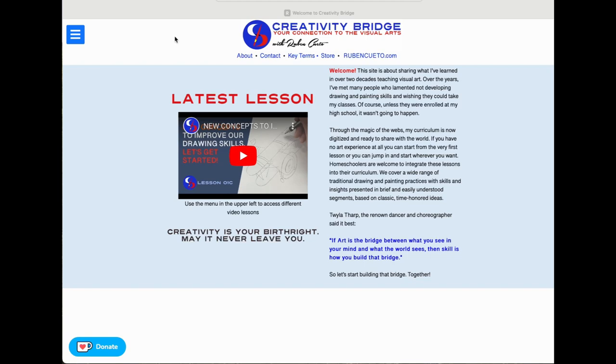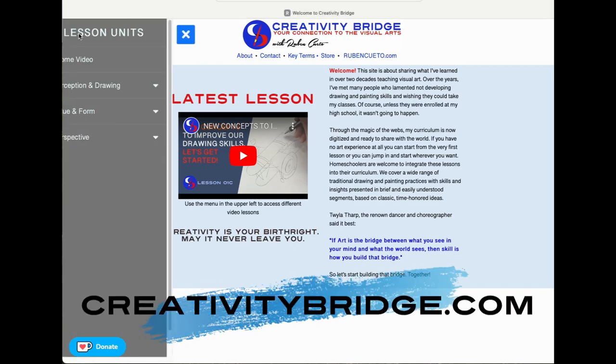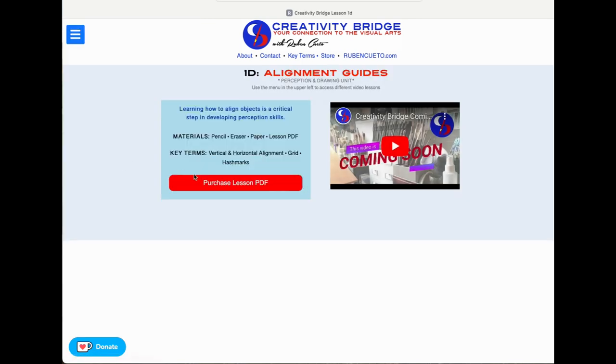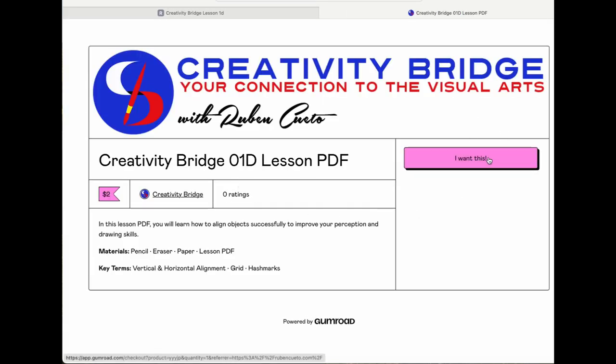To purchase a drawing task for this lesson, go to creativitybridge.com and click on the upper menu. There you can click on our first unit perception and drawing and go down to our current assignment alignment guides. Click on the purchase lesson PDF button and there you can click on I want this.